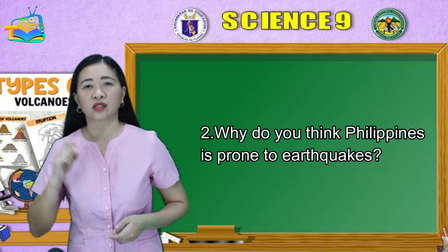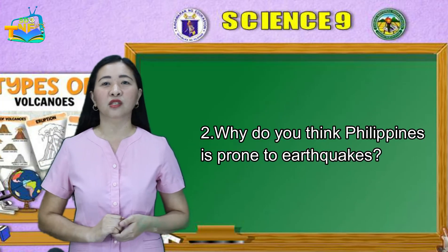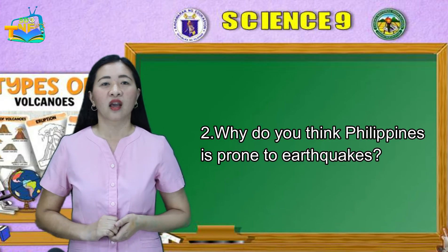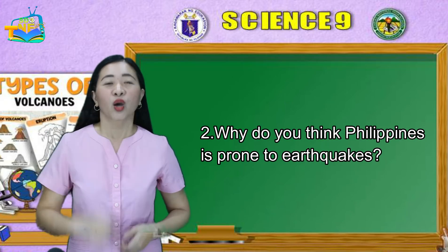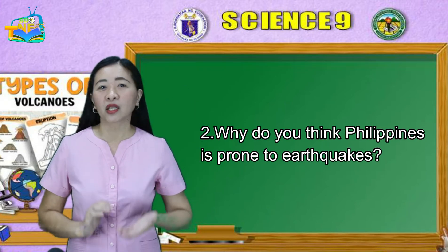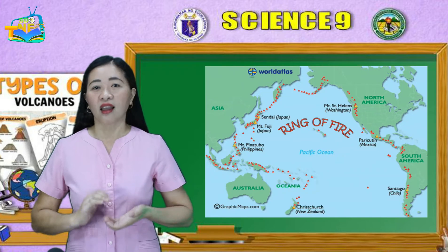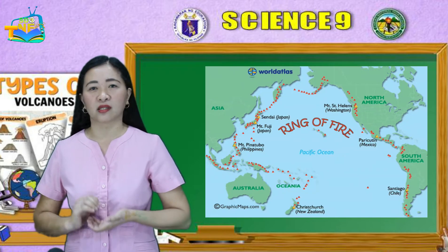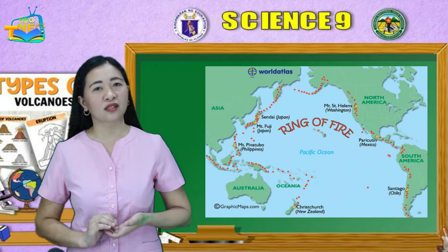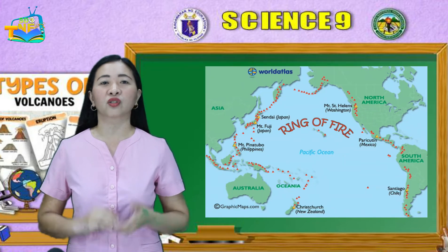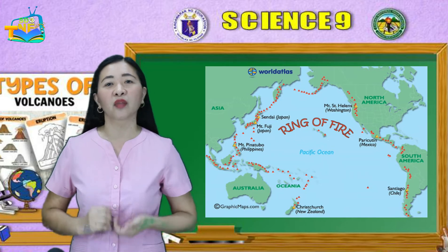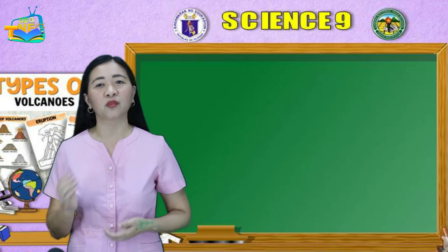Why do you think the Philippines is prone to earthquakes? The Philippines lies along the Pacific Ring of Fire, which causes the country to have frequent seismic and volcanic activity.